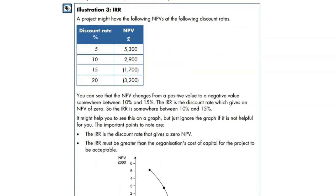To do the IRR, we need to take two NPV. How many NPV? Two NPV. One positive, one negative.